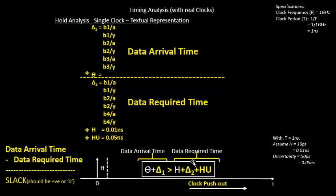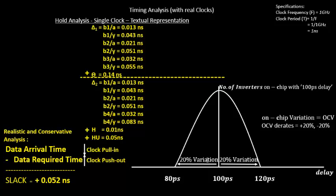We'll use a 20% variation with this standard OCV curve. Clock pull-in reduces launch clock cell delays by 20% — for example, the 13 ps delay becomes less than 13 ps. Clock push-out increases capture clock cell delays by 20% — so values become 20% greater than 13 ps, 21 ps, etc.